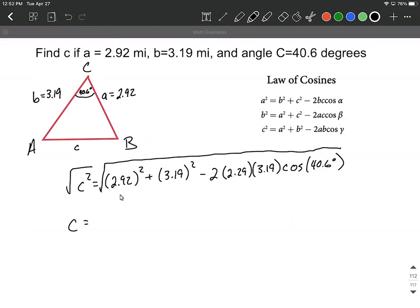I'm punching this in: 2.92 squared plus 3.19 squared minus 2 multiplied by each one of these, cosine button, making sure we're in degree mode, 40.6, close the set of parentheses off for the cosine, and then close off the square root at the very end.